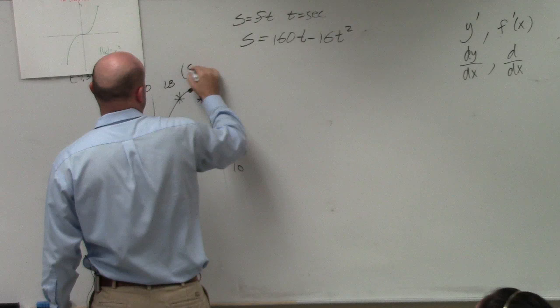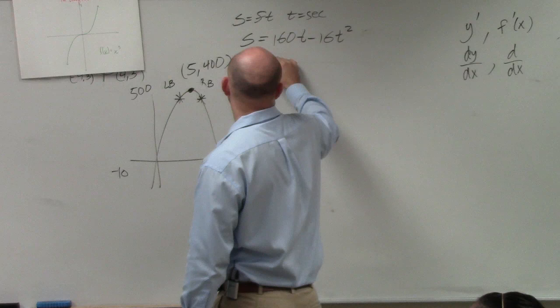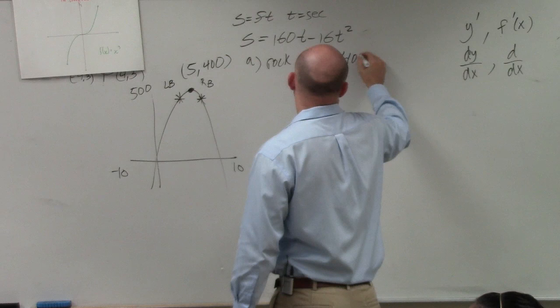So how high does the rock go? By using my calculator, I can see that this point is 5 comma 400. So I can say that the rock reaches 400 feet.